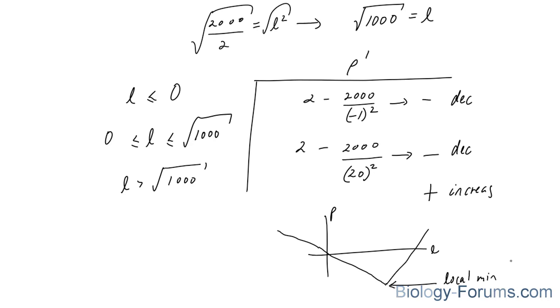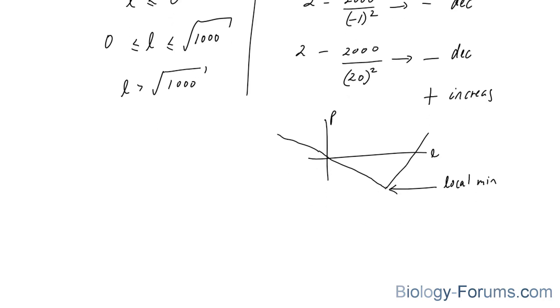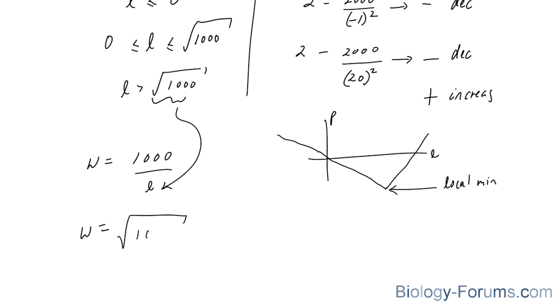Now that we've confirmed that L is a local minimum, the square root of 1,000, we can go ahead and find our W. And it's really easy to find your W. W is equal to 1,000 over L. And if we substitute this value into L, we should also get W is equal to the square root of 1,000.